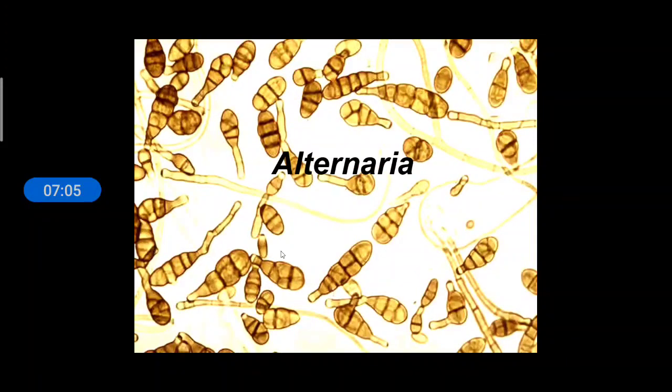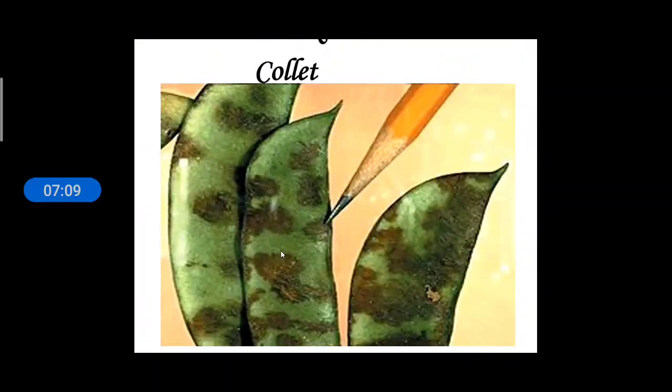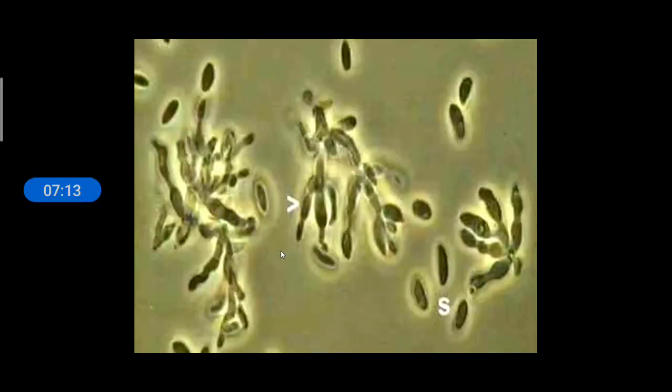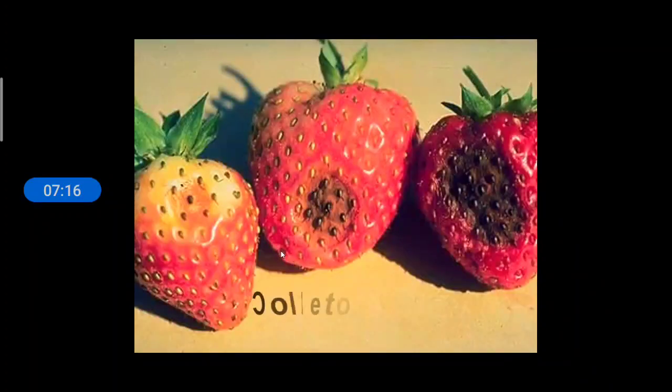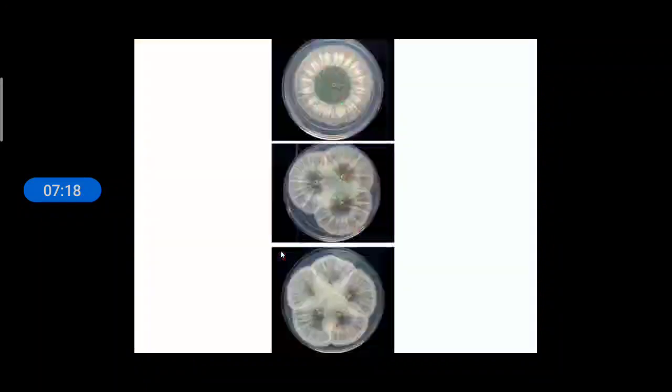Alternaria is an example which cause disease on cabbage. These are their spores. This is Colletotrichum which cause disease on beans and on strawberry. And this is Trichoderma. These are the examples. Thank you.